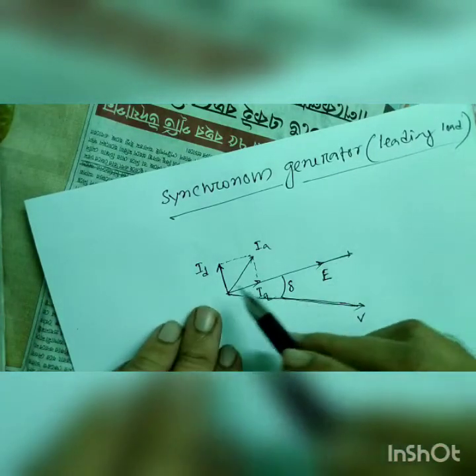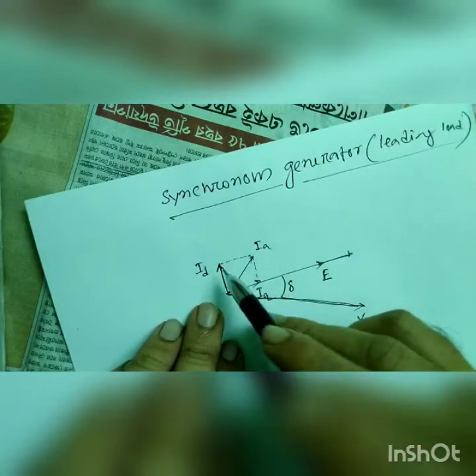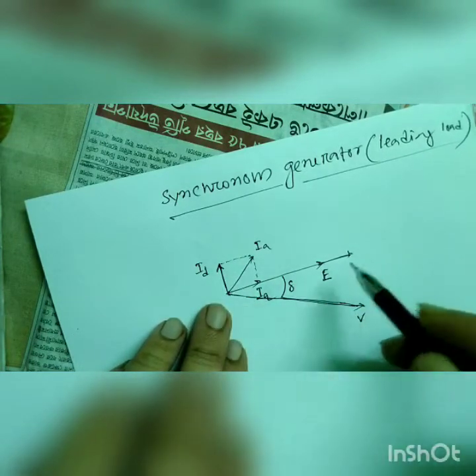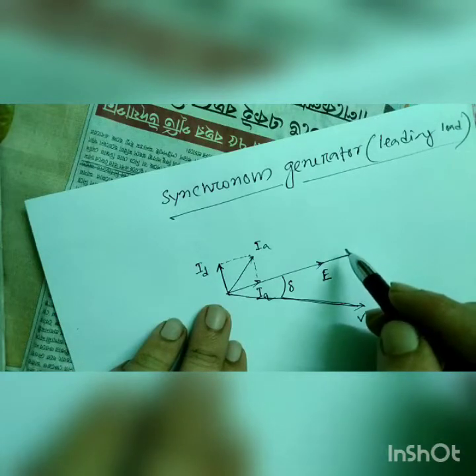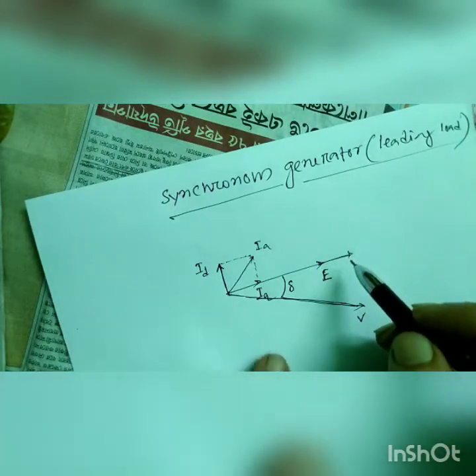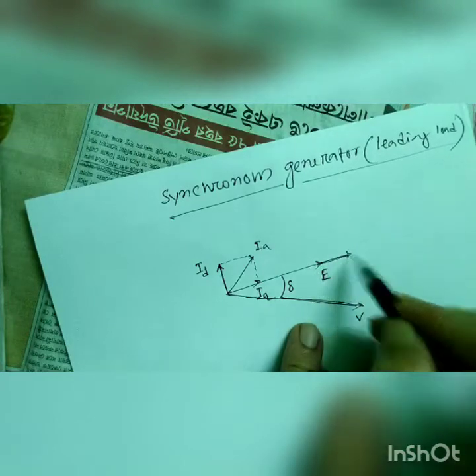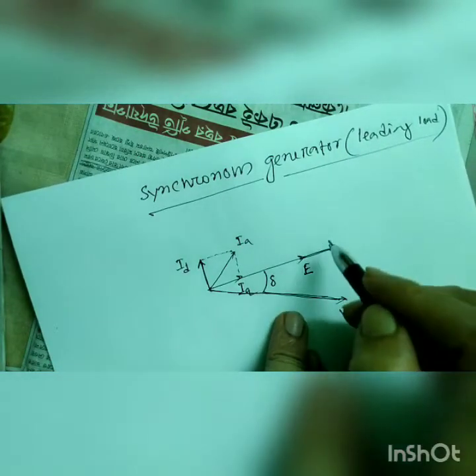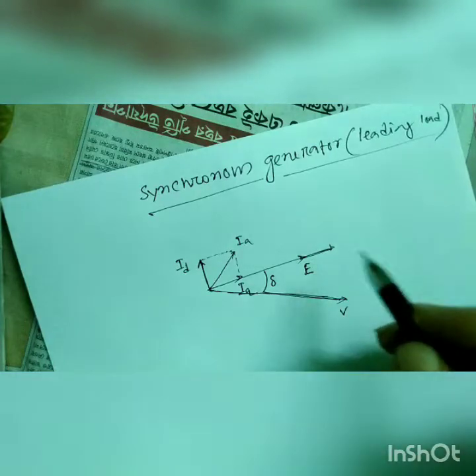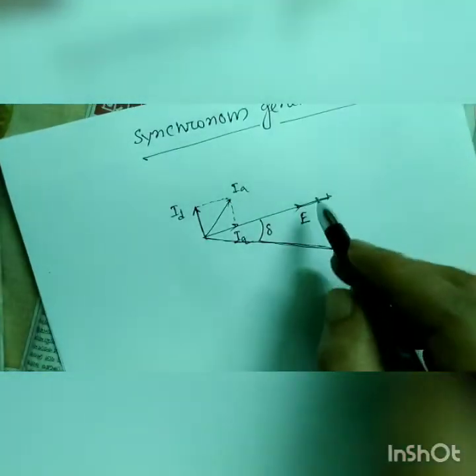So this will be ID is here, so this will be minus ID xd.